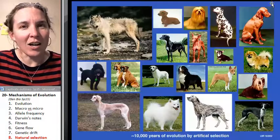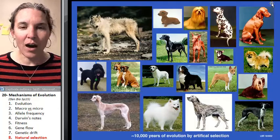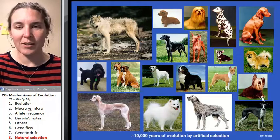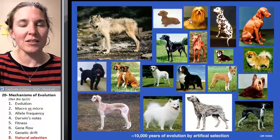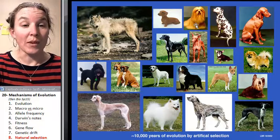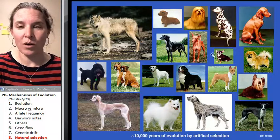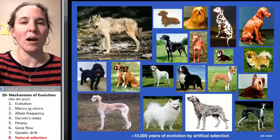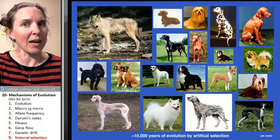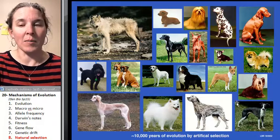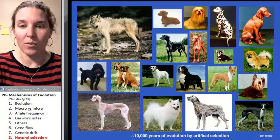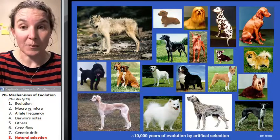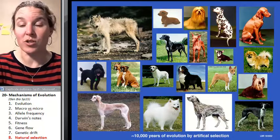Let's talk about the dog. Clearly, there is no evolutionary advantage for pretty much any of these breeds. They would get absolutely destroyed in the wild. This is the wolf from whence they came, and it's pretty unbelievable how we ended up with what we ended up with in the world of dogs. That's an example of artificial selection.